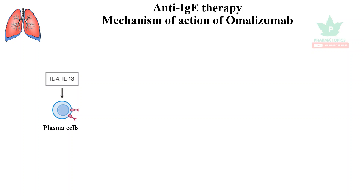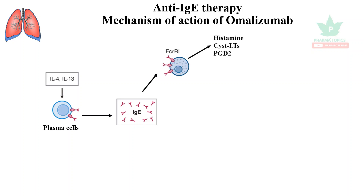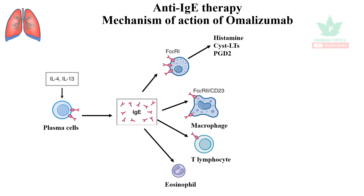The plasma cells, when acted upon by interleukins such as interleukin-4 or interleukin-13 in case of respiratory allergies, release the antibodies IgE. IgE acts on the mast cells and releases histamine, leukotrienes, and prostaglandins. IgE can also act on macrophages, T lymphocytes, and eosinophils.